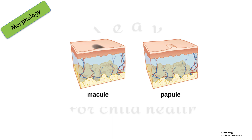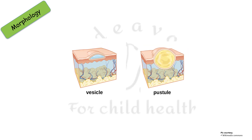A macule has a flattened top while a papule is slightly elevated but less than 0.5 cm in size. A plaque is also elevated but more than 0.5 cm. A vesicle is elevated and filled with fluid, less than 0.5 cm, while a bulla is filled with fluid but more than 0.5 cm. A pustule is like a vesicle or bulla but filled with pus.